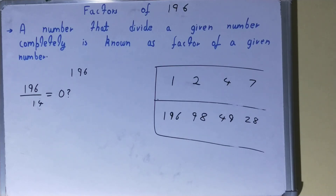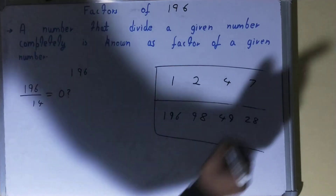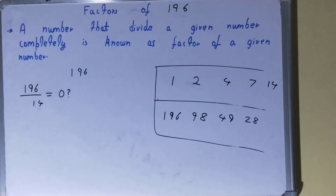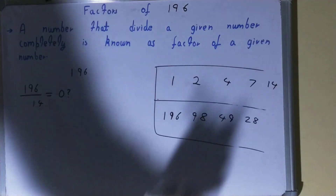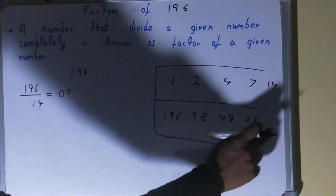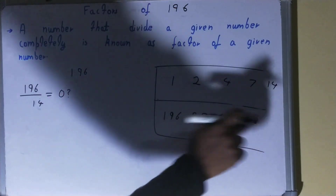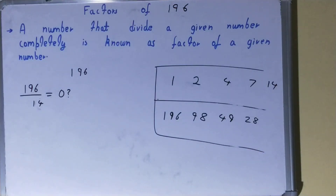Fourteen: 14 times 14 is 196, so it is divisible by 14. However, since 14 already appeared in our second row of factors, we don't write it again to avoid duplicate numbers. Our work is done here.